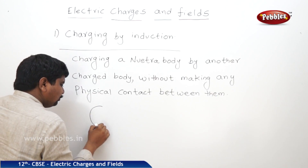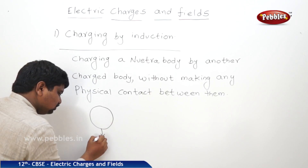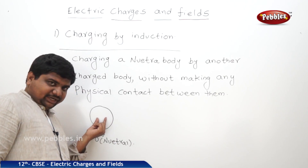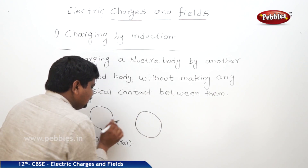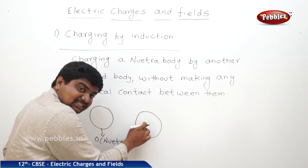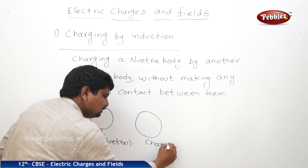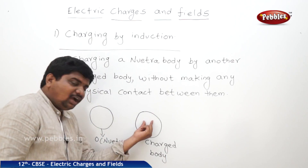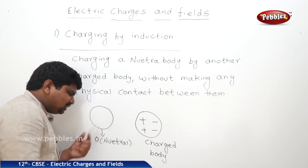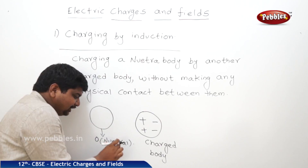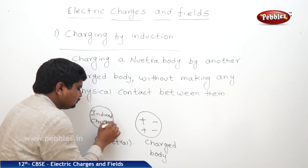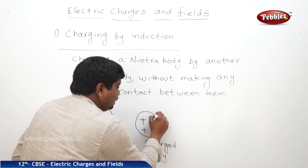Take a body whose charge is zero — that is, a neutral body. Now I want to inject charge into this neutral body. For this purpose, I am placing another charged body close to the neutral body, but without any physical contact — these two bodies are separated by some distance. The charge present in this charged body can develop an induced charge in the neutral body. That's why the charge developed in the neutral body is called induced charge.